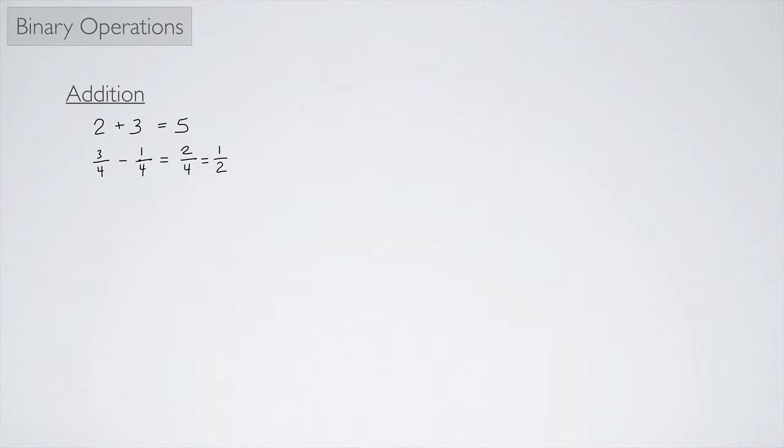Well, subtraction is really just like addition. Let me show you. Three fourths minus one fourth, that's the same thing as three fourths plus negative one fourth. So we can think of subtraction as addition in a certain way. So this, again, acts as a binary operation.